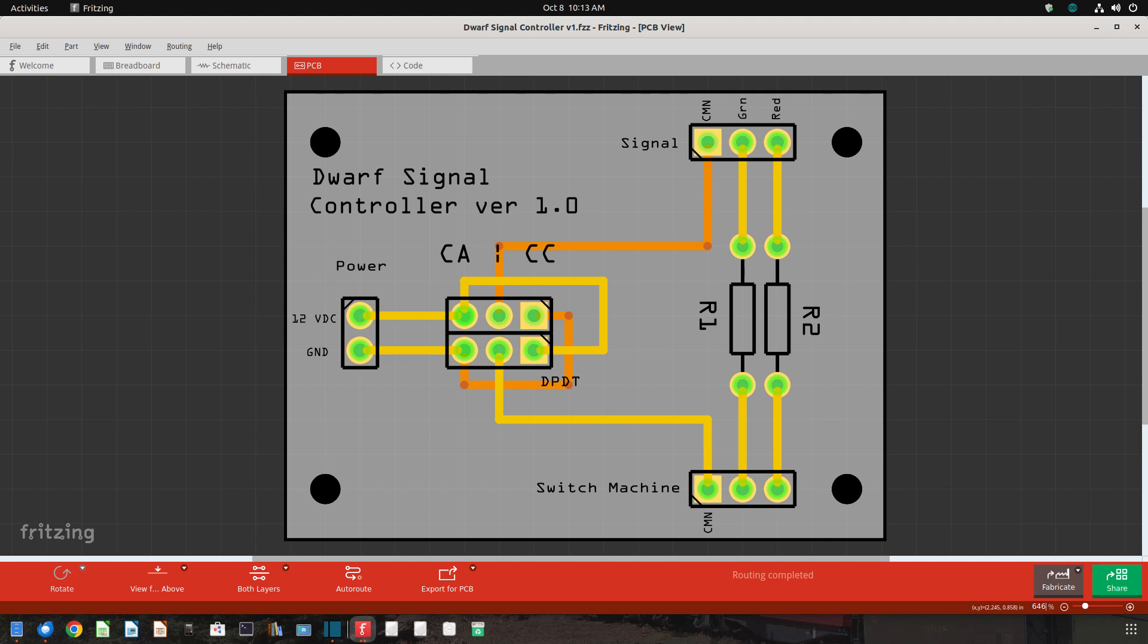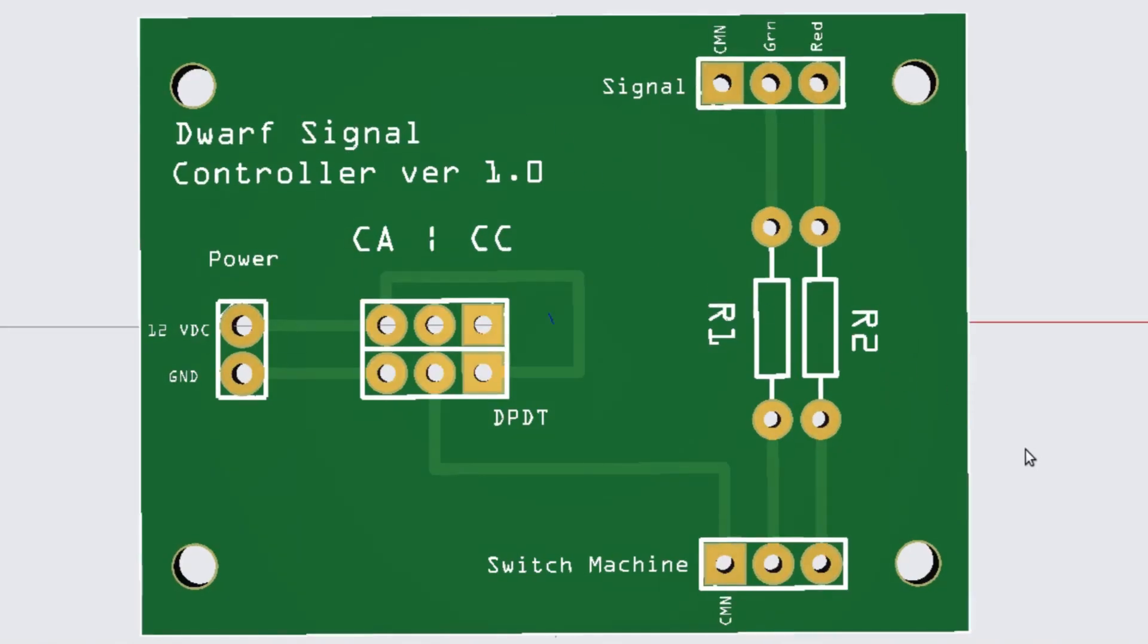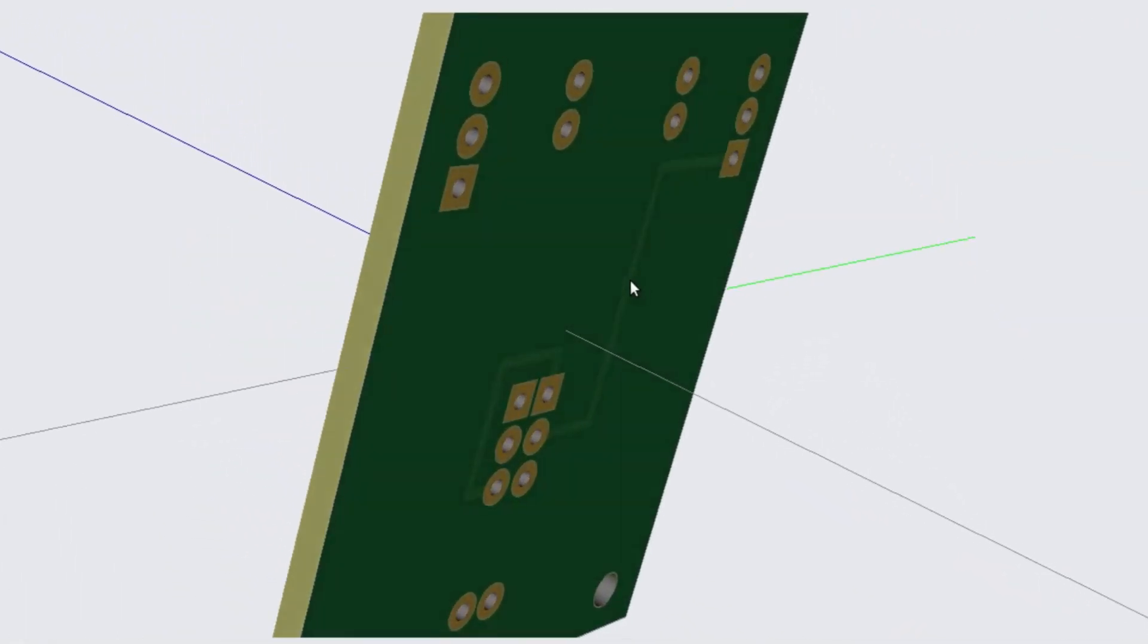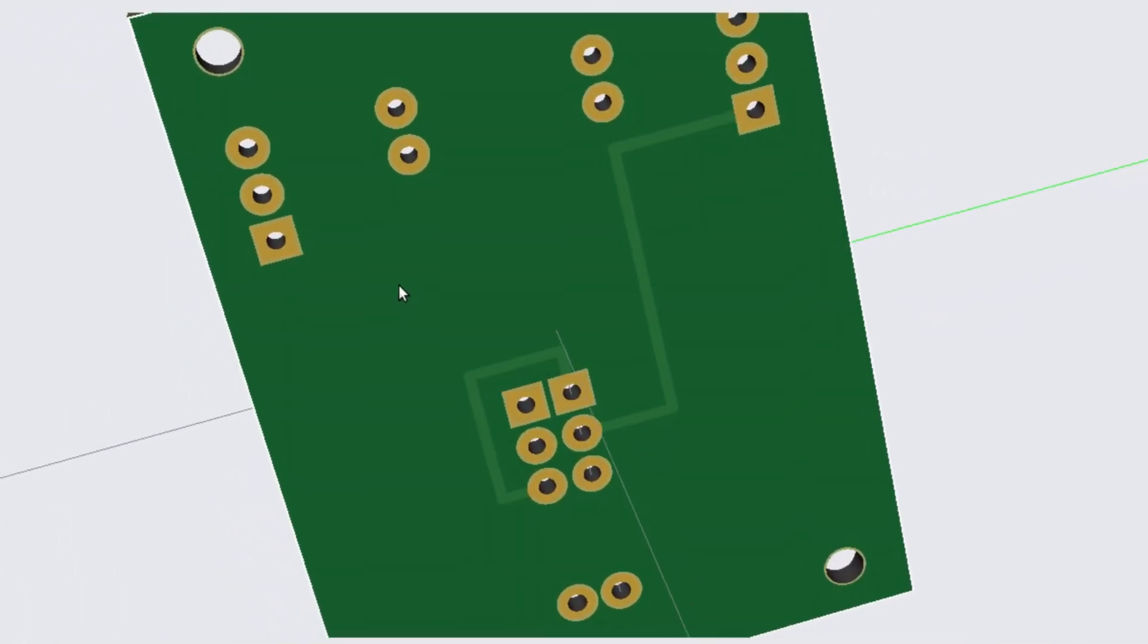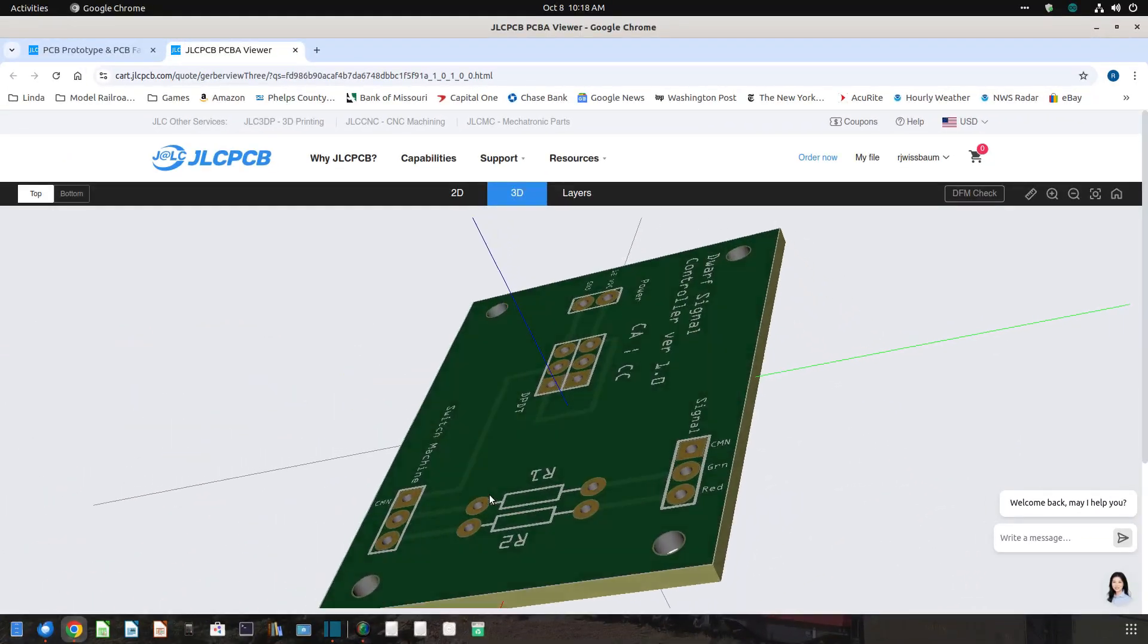It's fairly easy to design your own printed circuit board using the Fritzing software. Even though I was a brand new user, I designed this PCB in a few hours. This board is 3.3 by 4.4 centimeters, a little smaller than the prototype board, which was 4 by 6 centimeters. Once the board design is complete, you can export the file for production and upload it to a custom board printing service.